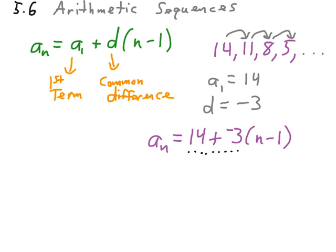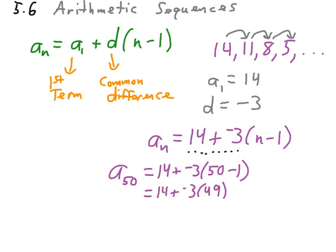Well, since I replaced the n in my original function with 50, that means n on the other side will also be replaced with 50. So, a sub 50 equals 14 plus a negative 3 times 50 minus 1. And running through our order of operations, this means 14 plus a negative 3 times 49, which is 14 plus a negative 147. 14 plus a negative 147 is a negative 133.